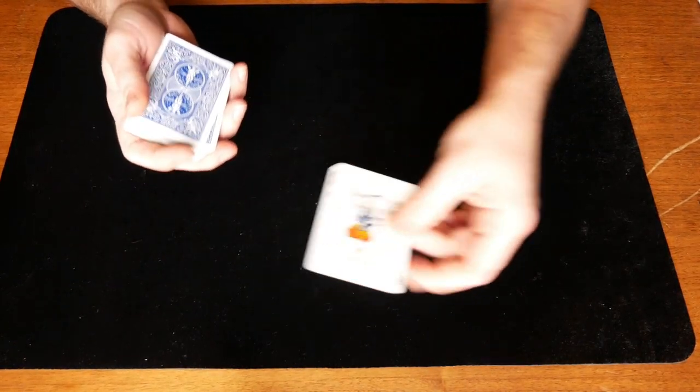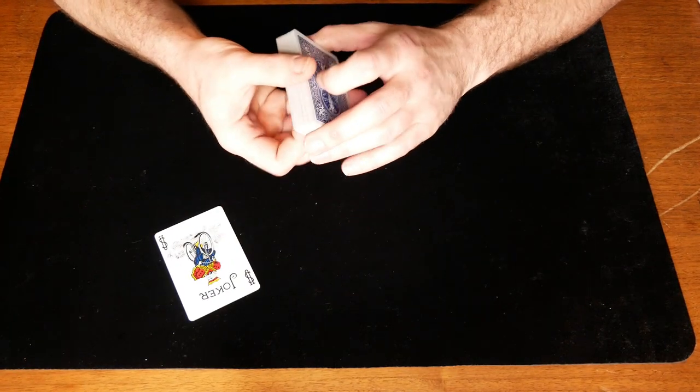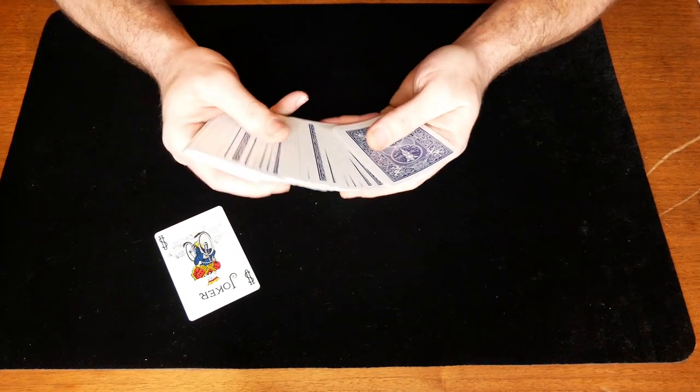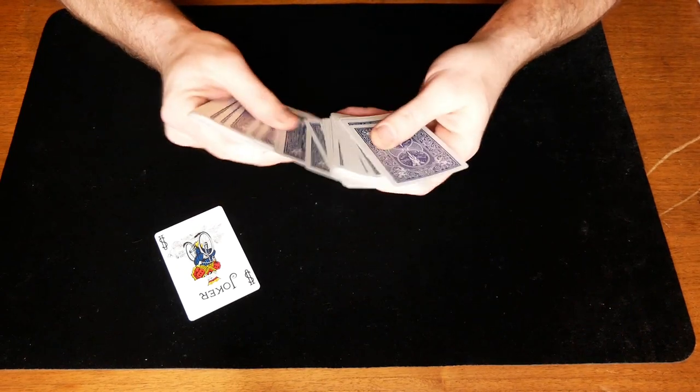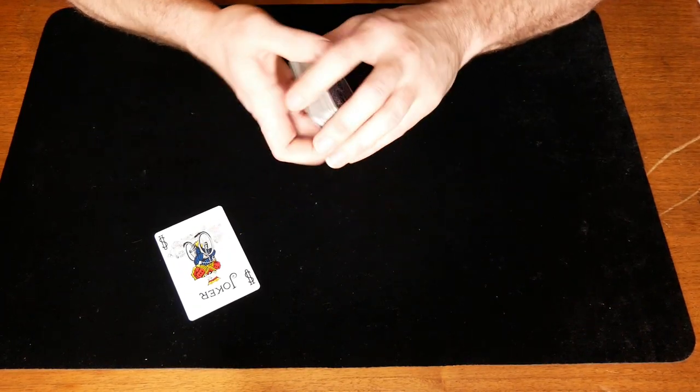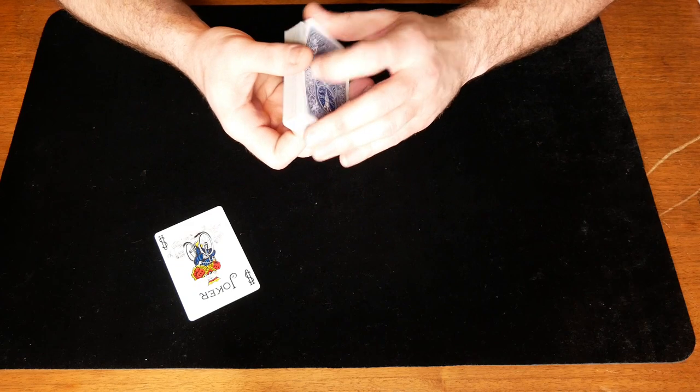Now let's explain how that's done. It really doesn't matter what card they select. They can select any card. You don't have to see it. You don't have to know what it is.